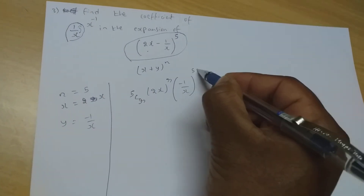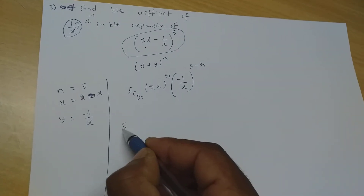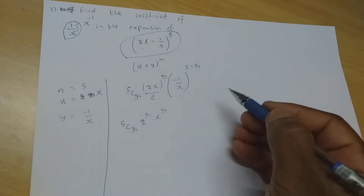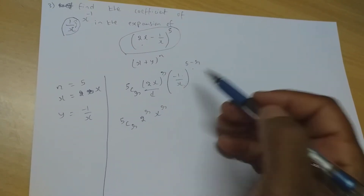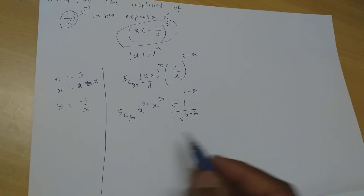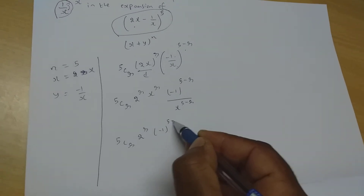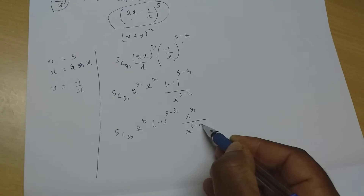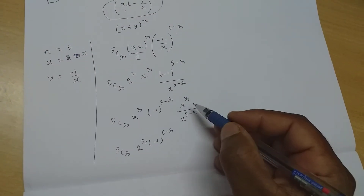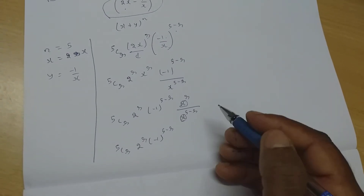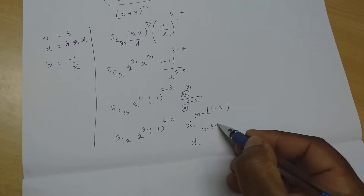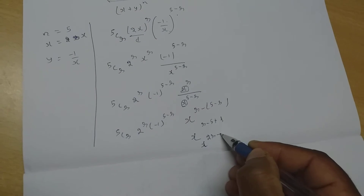Splitting: 5Cr · 2^r · x^r · (−1)^(5−r) / x^(5−r). Write all numbers first: 5Cr · 2^r · (−1)^(5−r) · x^r / x^(5−r). Since bases are the same with division, subtract the powers: x^(r − (5−r)) = x^(2r − 5).